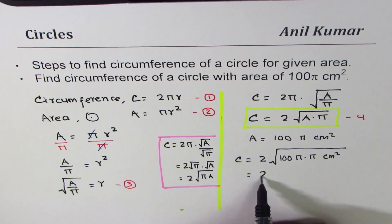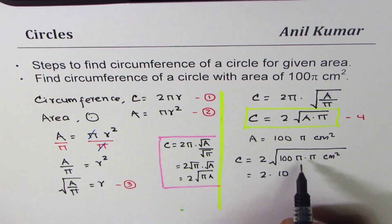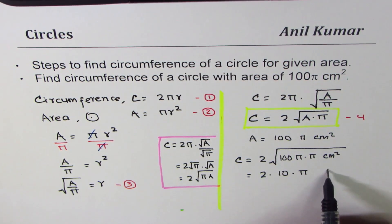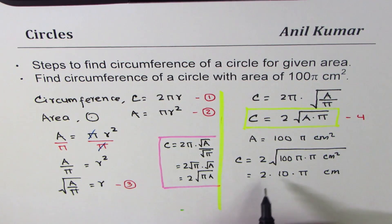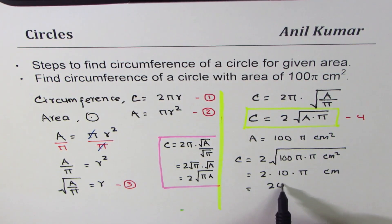So we get 2 times square root of 100 is 10. Square root of π square is π. Square root of centimeter square is centimeters, right? So the exact value for the circumference is 20π centimeters.